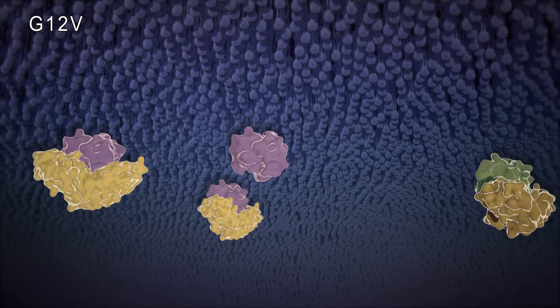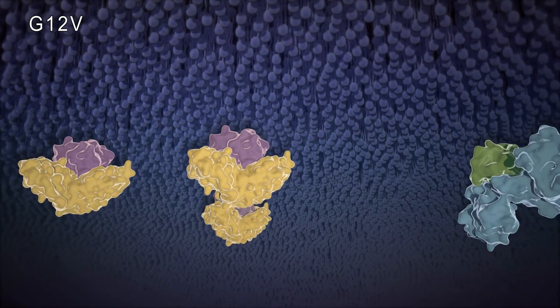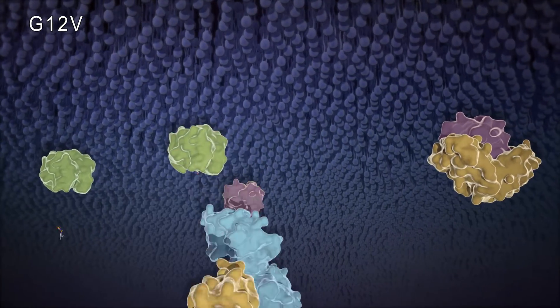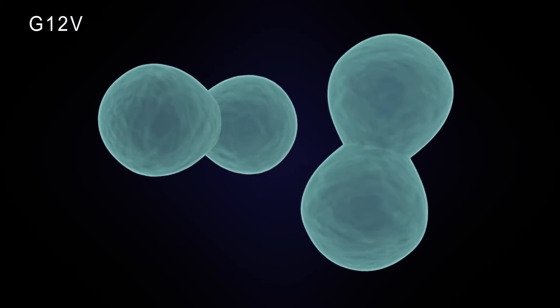Because active Ras results in signaling of cell growth and proliferation, overactive Ras signaling will result in uncontrolled cell division and ultimately cancer.